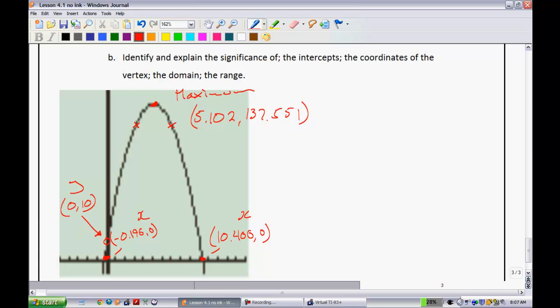Now, the question originally said, identify and explain the significance of the intercepts. Well, let's talk about this. Remember that we're shooting a projectile of some sort. All right. So we're launching it up. It was launched from, let's say, right around here. And, of course, we have the graph like so.